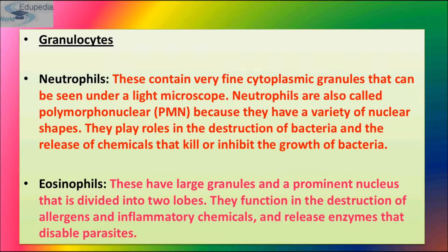Eosinophils produce antitoxins, phagocytize antigen-antibody complexes, and show antihistaminic properties. An abnormal increase in eosinophils is called eosinophilia, which occurs in allergic conditions. They have large granules and a prominent nucleus divided into two lobes. They function in the destruction of allergens and inflammatory chemicals, and they release enzymes that disable parasites.